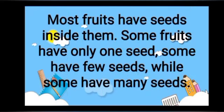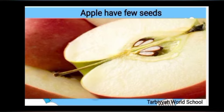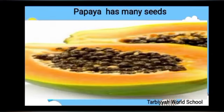Most fruits have seeds inside them. Some fruits have only one seed, some have few seeds, while some have many seeds. Mango has only one seed. Apple has few seeds. Papaya has many seeds — you can see them in the middle of the papaya.